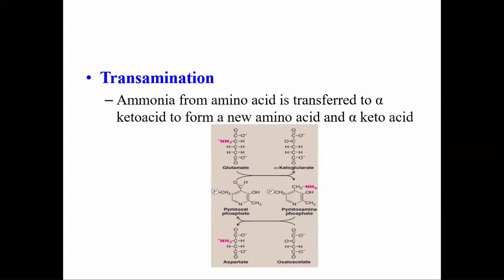Non-essential amino acids are those which can be synthesized in our body, while essential amino acids cannot be synthesized and must be supplied from dietary sources. When sufficient amounts of essential amino acids are supplied in the diet, non-essential amino acids can be synthesized in our body by means of transamination. Transamination is also necessary for balancing amino acids.